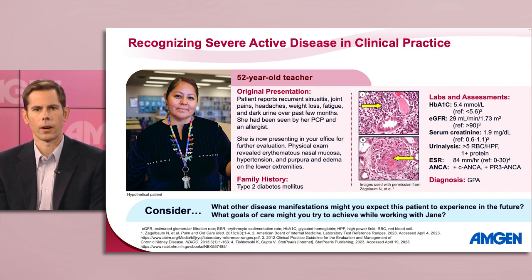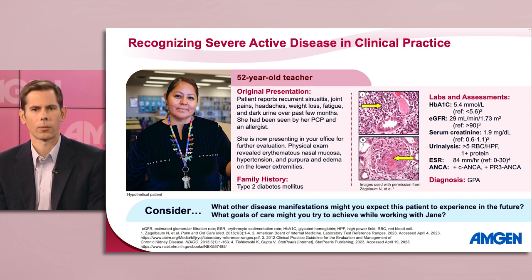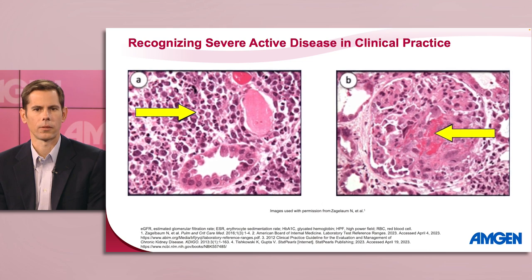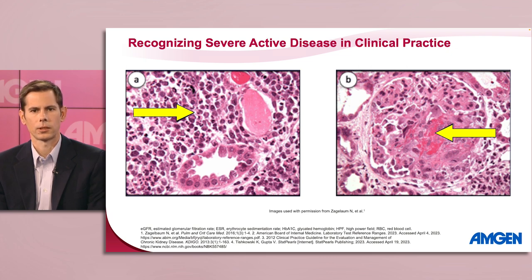ENT involvement and serology steer us towards a diagnosis of severe active GPA over MPA. Given the renal involvement in this patient, I would also consider a renal biopsy. However, biopsy collection in this patient should not delay initiation of appropriate therapy. Pictured on the right side, we see an example of what a renal biopsy might show in a patient with ANCA-associated vasculitis.